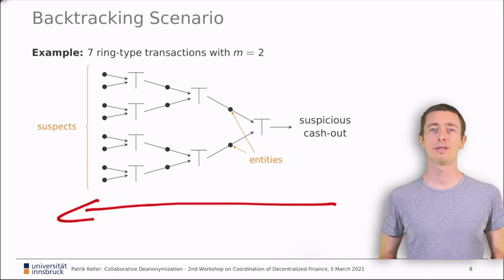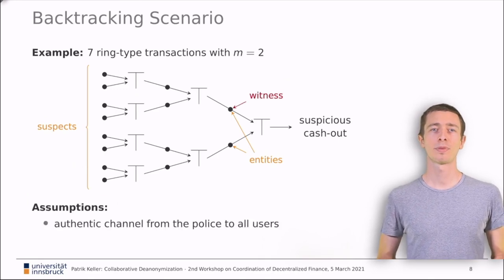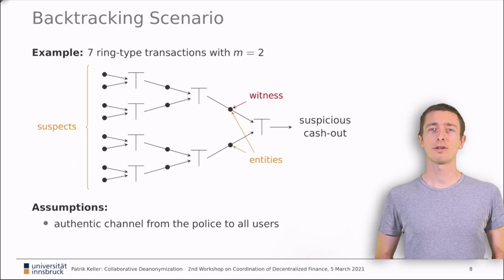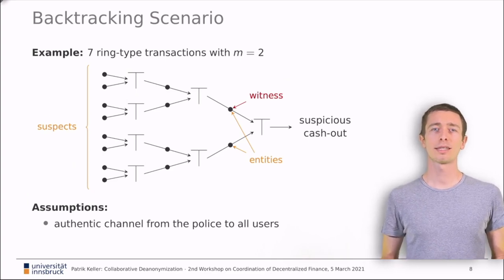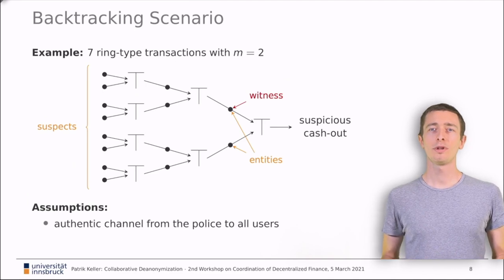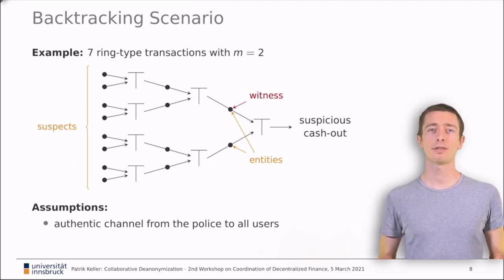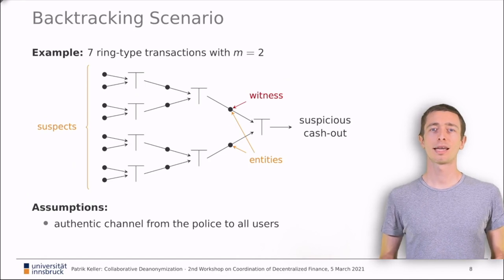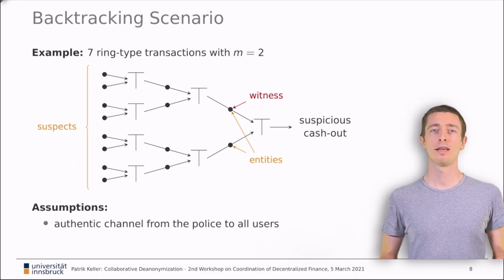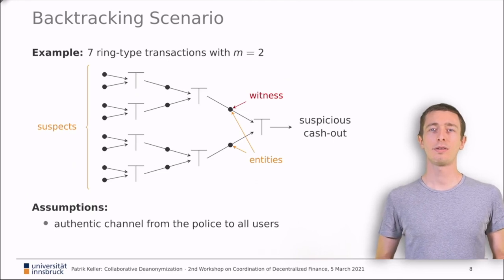So, what can collaborative de-anonymization do for us? First, we assume some sort of authentic channel that the police can use to contact all, or at least most, of the users that are part of this cascade. We do not go into detail about how this channel might look like in practice. But remember, the public ledger records public keys of all entities. Thus, the police can address the users individually and the users can reply confidentially using their pseudonyms.